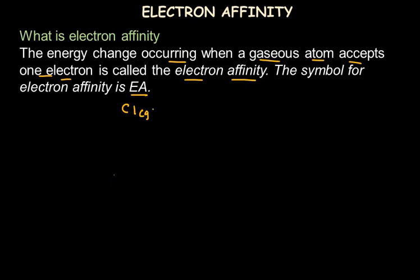Let's understand that with the example of chlorine. When chlorine in its gaseous state accepts an electron, it turns out to be a singly negatively charged chlorine atom, and the energy change involved here is called the electron affinity, denoted by the symbol Ea.